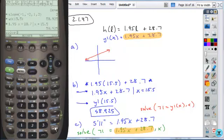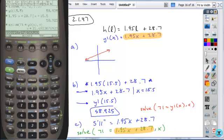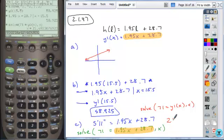F2 algebra tab, choose solve, and just say 71 is equal to Y1 of X, comma X tells the calculator what we want it to solve for, and when we hit enter, we get our solution, 21.69 approximately, for our answer.